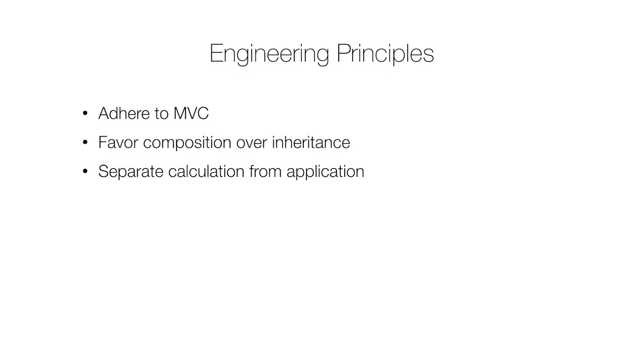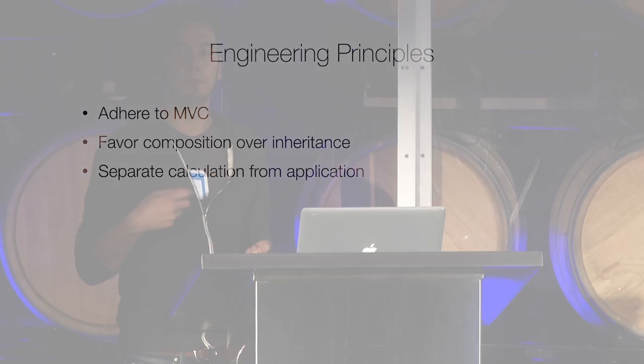So the Paper team set out to build a very high quality code base. And I'm not going to talk about any secret sauce or radical inventions here. This is just straightforward applications of software engineering principles that we all know. I'll talk about three of those principles here today: we strictly adhere to MVC; we favor composition over inheritance for our object system whenever possible; and we separate the calculation of side effects from the application of side effects.